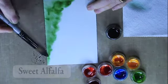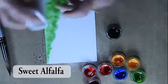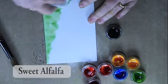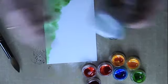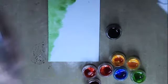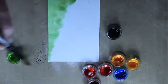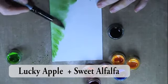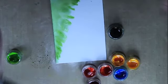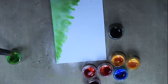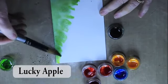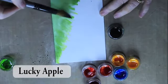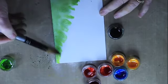The first step is to create a background. Here I'm going to be using the twinkling h2o's as a traditional watercolor, adding water and applying it to the surface. First, I am creating an area of foliage and then we'll fill in the remainder with the blue for the background.